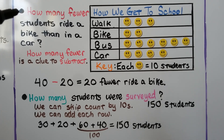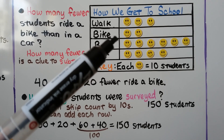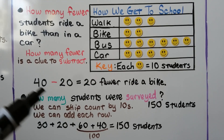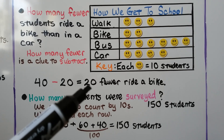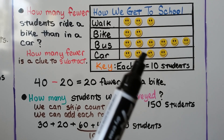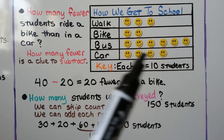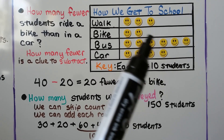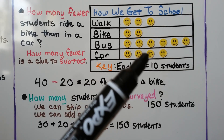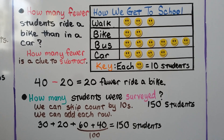How many fewer students ride a bike than a car? 'How many fewer' is a clue to subtract. Bike is 20 and car is 40, so 40 minus 20 equals 20 fewer that ride a bike. We can also look at the smiley faces — there are only two for bike and four for car, so there are two less, which is 20. We can use subtraction or count how many fewer pictures there are.